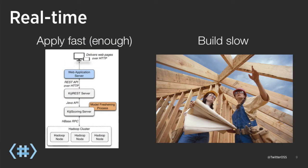Companies want to provide this sort of personalized experience. The way that we try to provide personalized experiences that apply quickly in real time is by splitting apart the model building from the model application. As long as model application happens very quickly — which is the whole point of the Kiji project — we can do whatever we need in the model building phase as slowly as we need, meaning we can use something like MapReduce.